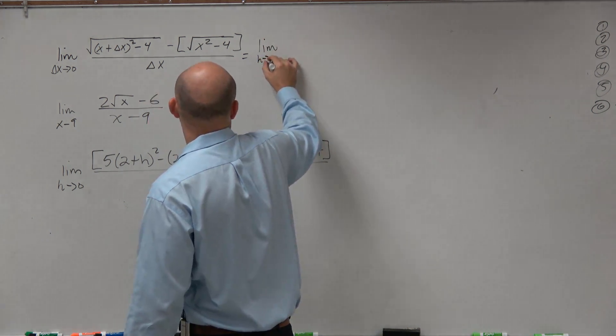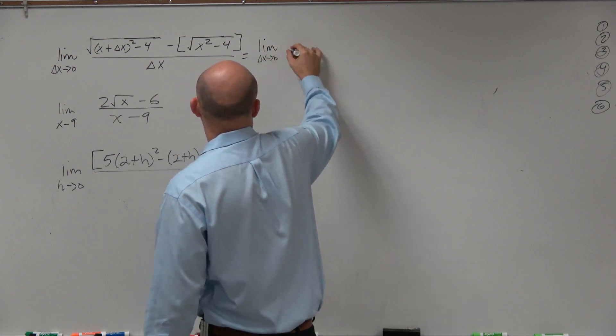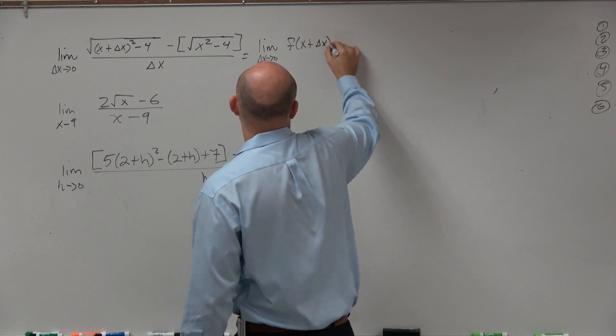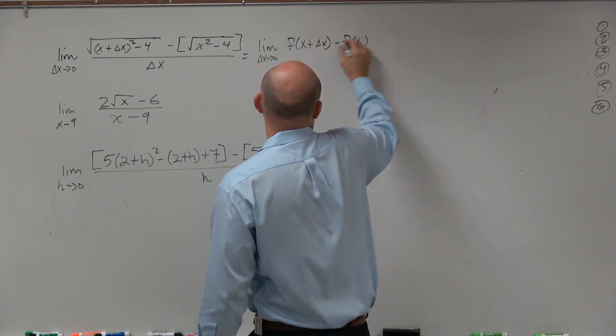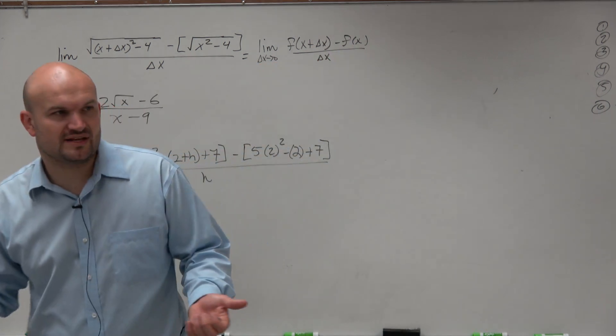And I'm just going to do this one, h going to 0, or let's just do delta x going to 0, of f of x plus delta x minus f of x all over delta x. I'm replacing delta x with h. That's OK with you guys.